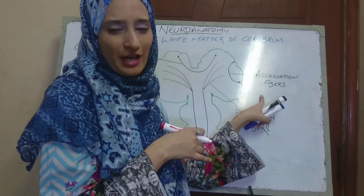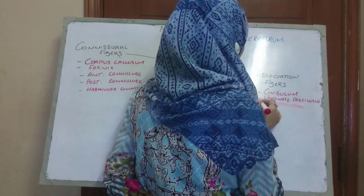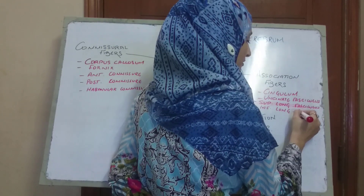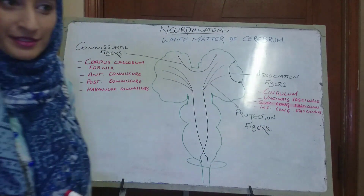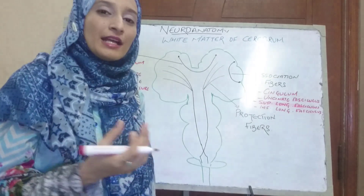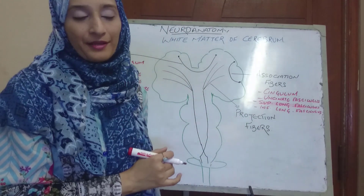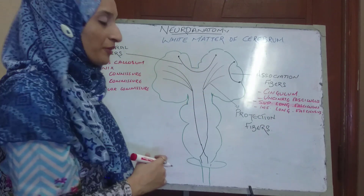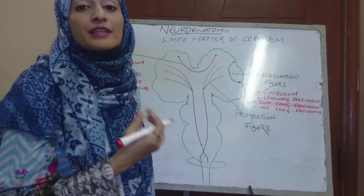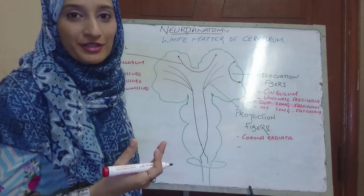Examples of association fibers include the cingulum, uncinate fasciculus, superior longitudinal fasciculus, and inferior longitudinal fasciculus. For projection fibers, many fibers of different tracts reaching towards the cortex spread out just like a crown — so they are termed the corona radiata. Another example of projection fibers is the optic radiation. We will talk about each one in detail.